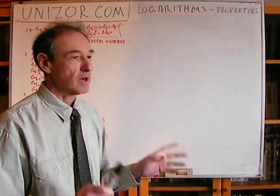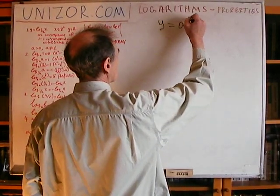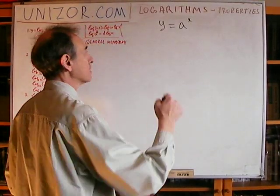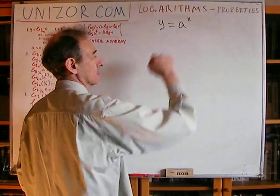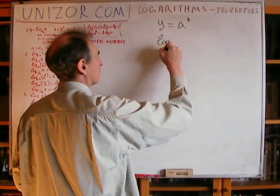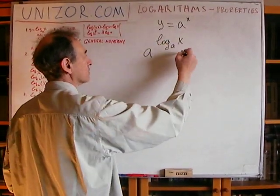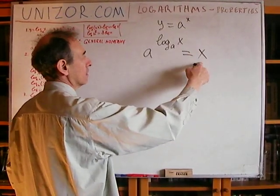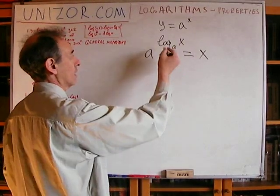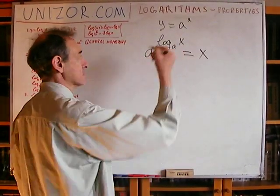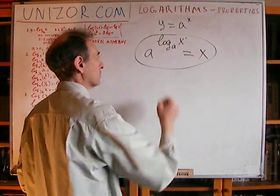First of all, logarithmic function is an inverse to an exponential function. Logarithmic function is an inverse, which means that knowing the value of the function, we can find the argument. This is an exponent which, if I use with a base A, I will get the argument. So this is basically a definition of what is a logarithm of X with a base A — it's the number which, if used as an exponent with base A, will give argument X.